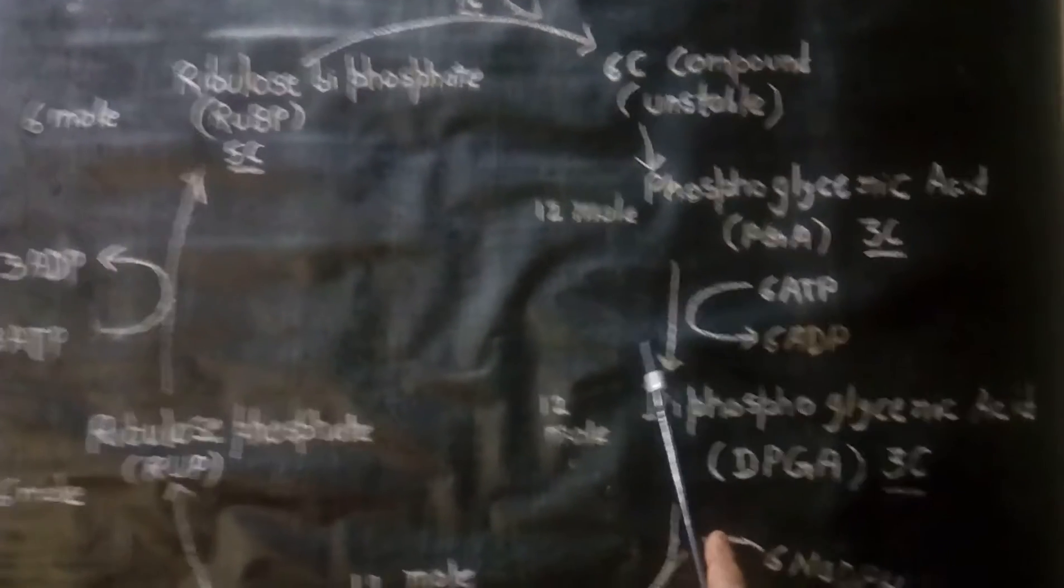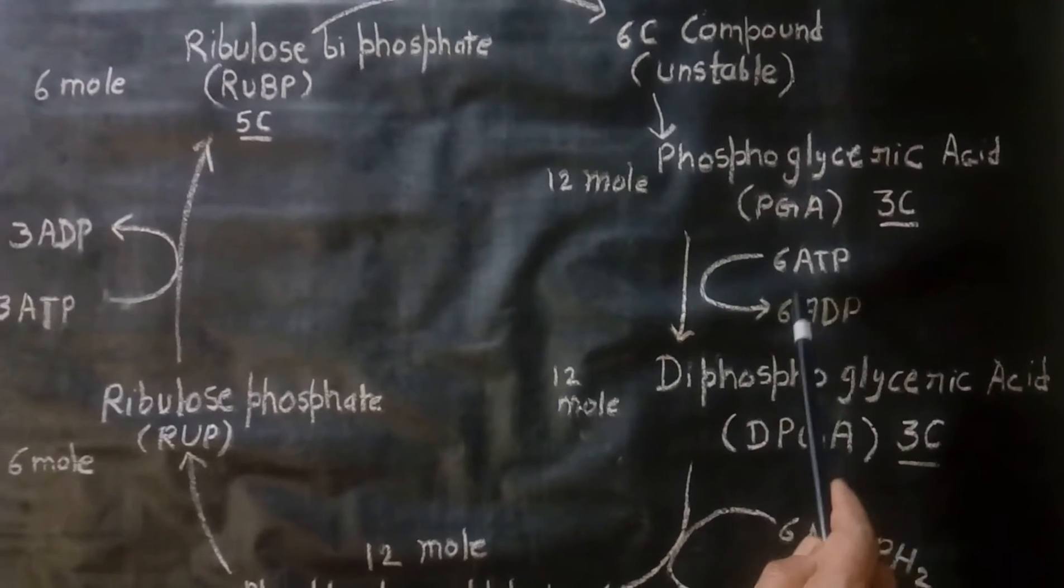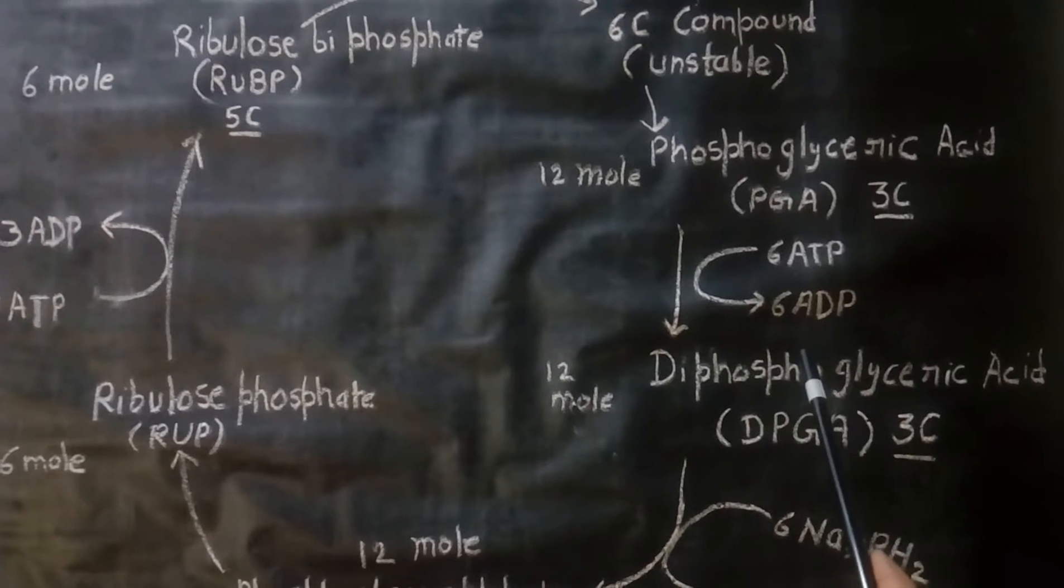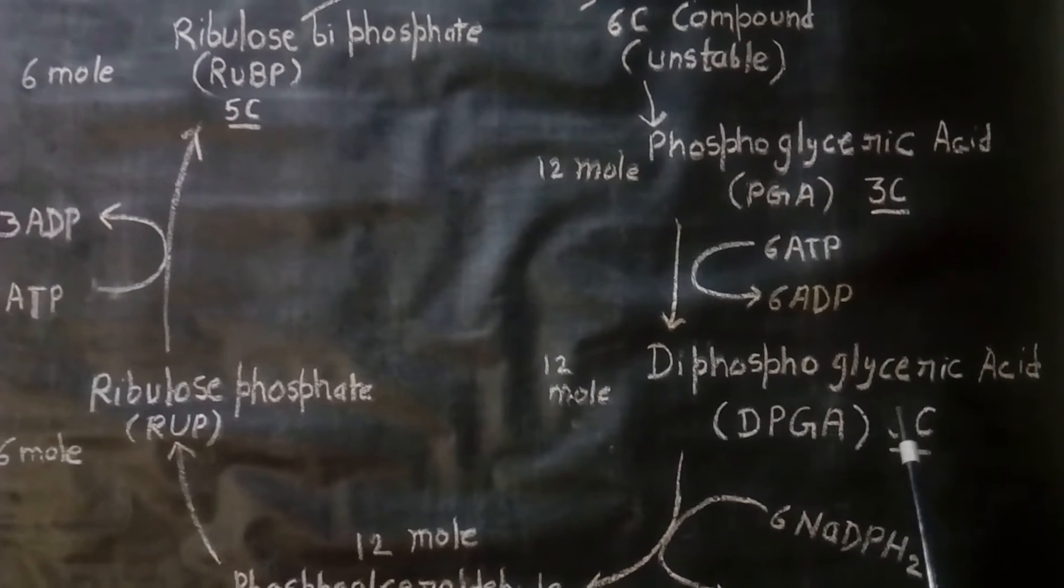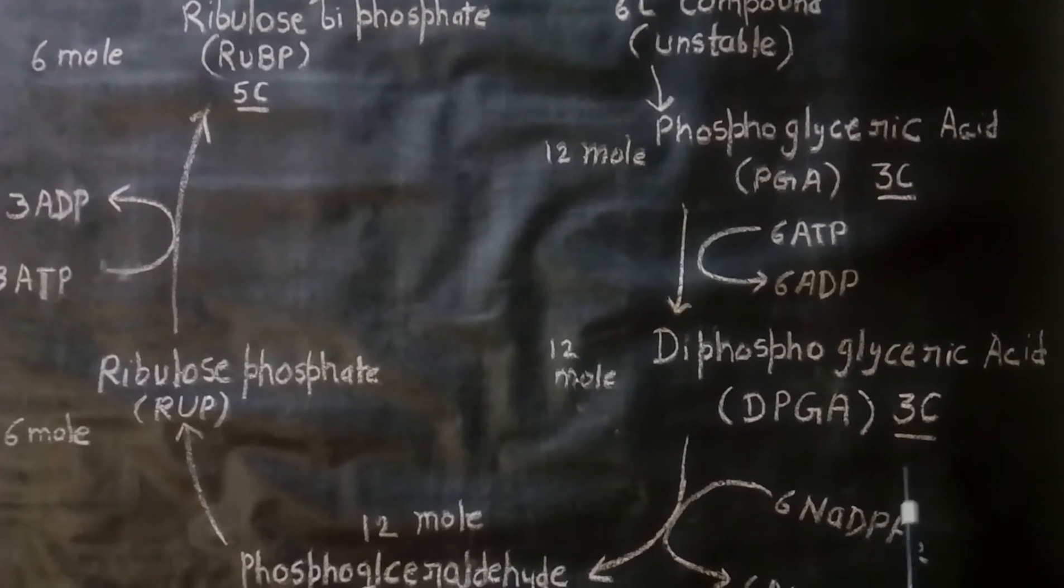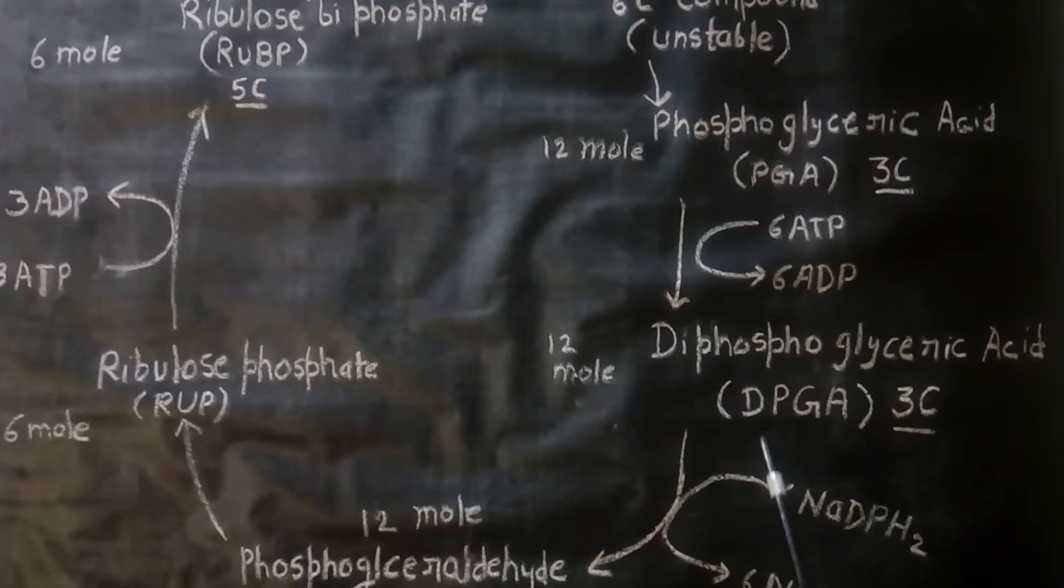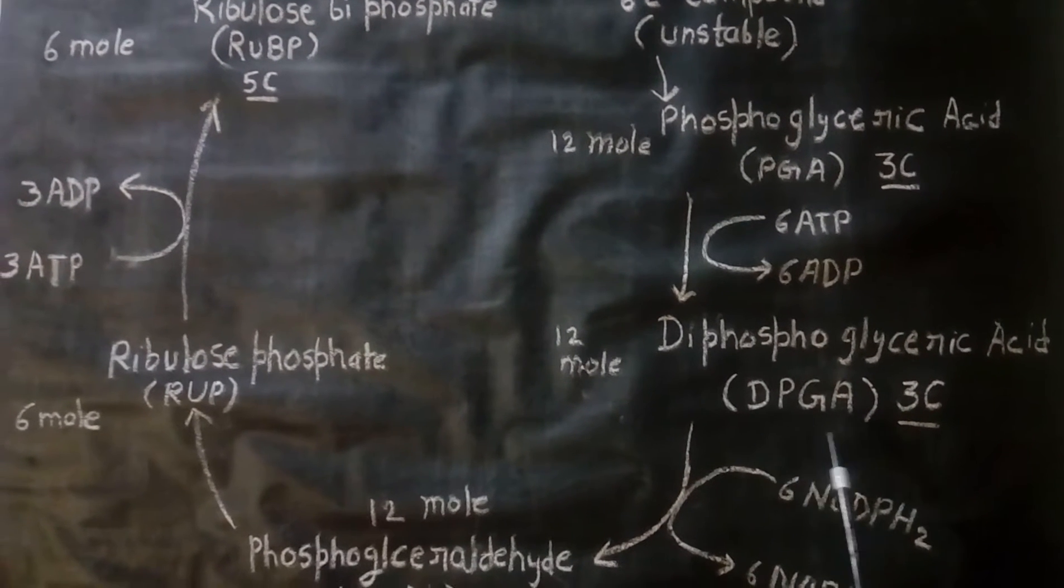Now it uses the phosphate group of ATP. ATP is changed to ADP and diphosphoglyceric acid is formed. It is a 3-carbon compound denoted by DPGA.